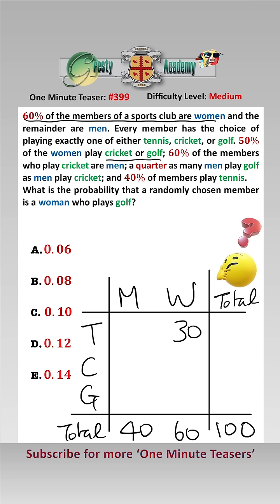40% of the members play tennis, which would be a total of 40, which means therefore that 10 men play tennis, which means that 30 men play either cricket or golf.